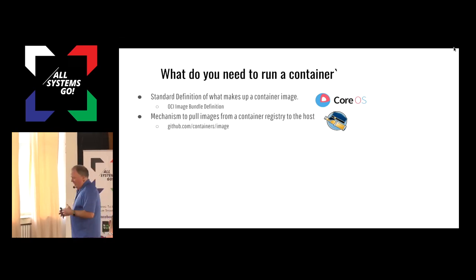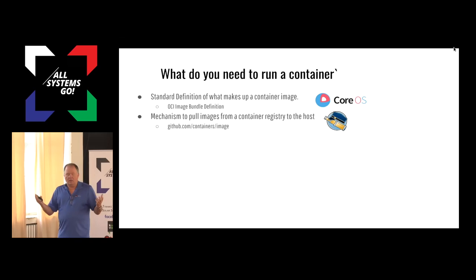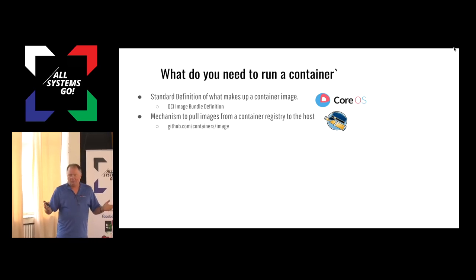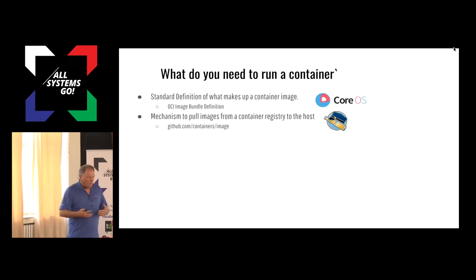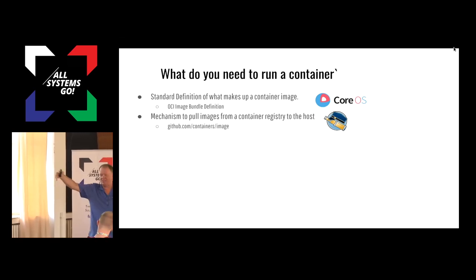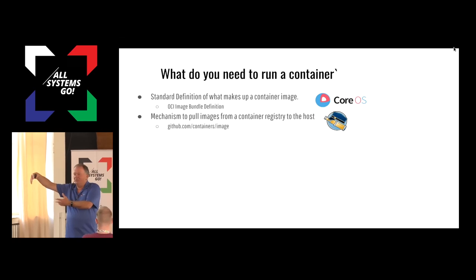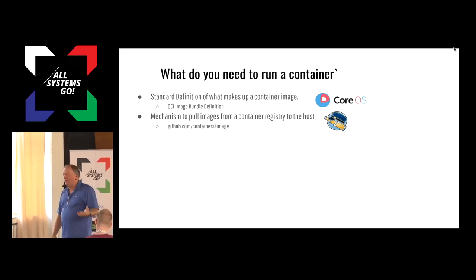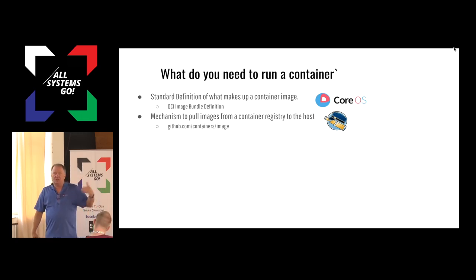The only way to get an image and look at what's inside of it right now is to pull it to the host — you have to pull that 2 gigabytes to your machine before you say 'that's not really what I wanted.' So we went upstream with that pull request, and they said 'sorry, we're not interested — it confuses the CLI too much.' But they said container registries are nothing but web services with tarballs, so go off and build your own tool.